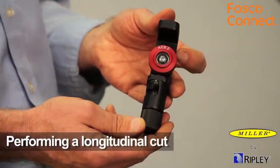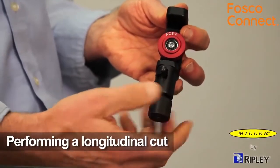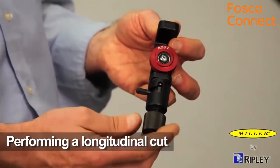Once the blade has been set, the first longitudinal cut can be made by loosening the black thumb knob completely and rotating the blade assembly to the longitudinal position.